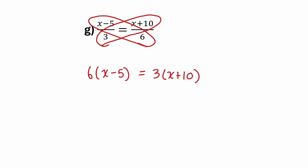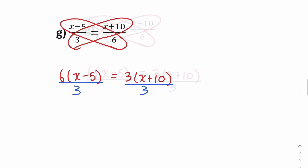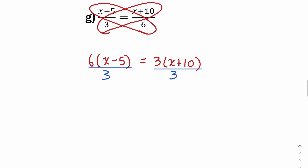We have a couple options here — we can expand both sides, or I noticed that dividing both sides by 3 might actually make this equation simpler. Let's try that: divide both sides by 3. On the right side, those threes cancel. And on the left, I have 6 divided by 3, which is 2.